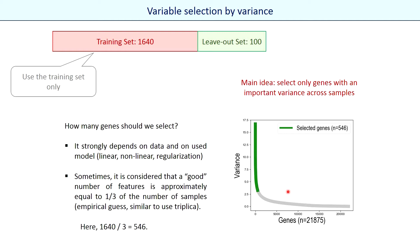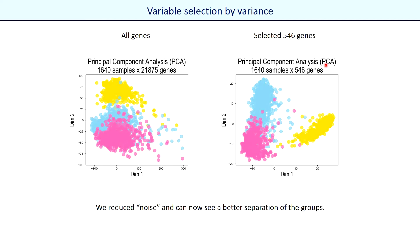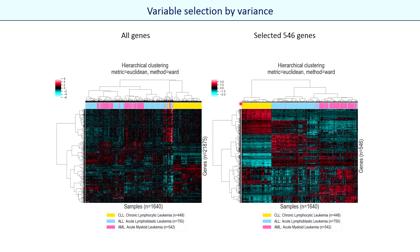In first approximation, we can speculate that if the expression level of a gene is the same for all samples, then probably this gene is less useful for prediction. It's not always true, but we can accept this idea for our example. So we select genes with high variance. How many genes should we select? It strongly depends on the data and the model used. We can empirically consider a good number to be roughly one-third of the number of samples, approximately 500 genes. If we visualize data using selected genes only, the separation between groups is a little better, and the groups of leukemia are much better separated on clustering images when we reduce noise.